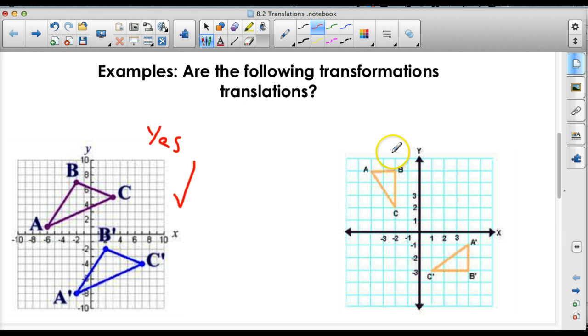All right, let's look at the second one. Now, right away, you should see a red flag because orientation looks like it's staying the same. And it definitely has moved, but it looks like the image has turned. And when you think a turn, you don't think of a translation. You think of a rotation, right? So this is a no.